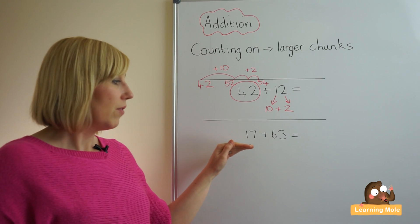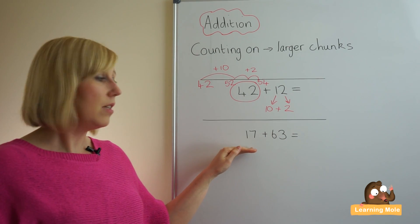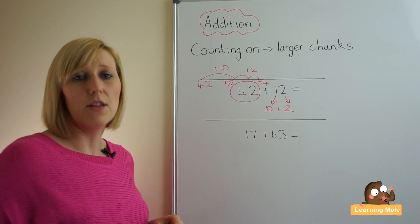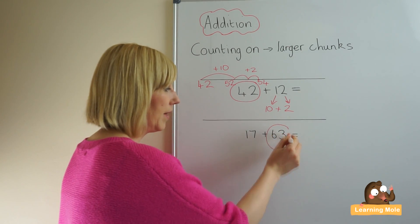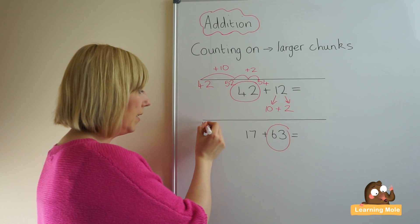So just going through it again with our next calculation, we've got 17 plus 63. Again, we identify the biggest number and that's the number that goes at the beginning of our number line.